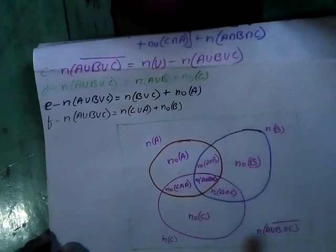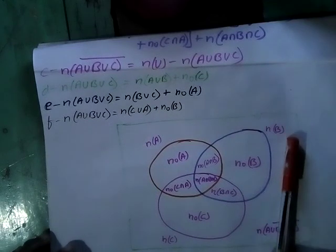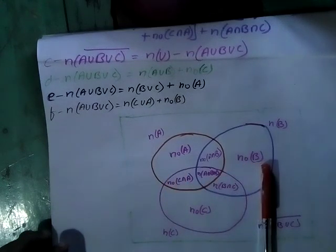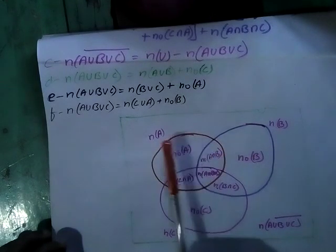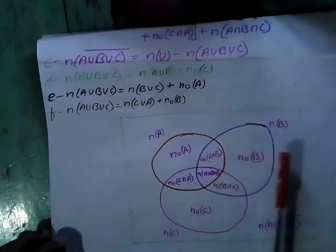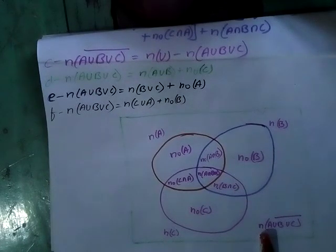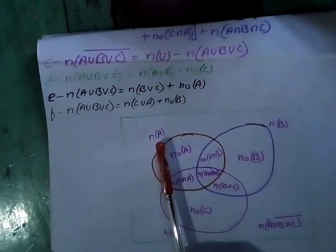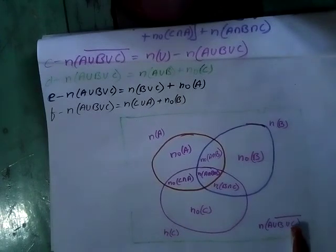In the Venn diagram, the complete box denotes the whole universal set U. The first circle denotes N(A), second circle denotes N(B), and third circle denotes N(C). N(A) only means only A, N(B) only means only B, N(C) only means only C. N(A∩C) only means intersection of A and C only, N(A∩B) only means intersection of A and B only, and N(B∩C) only means intersection of B and C only. N(A∩B∩C) is the intersection of all three sets, common to all. N(A∪B∪C)' means neither of any sets.